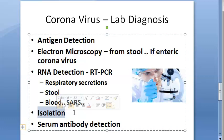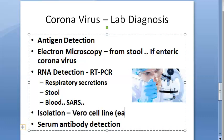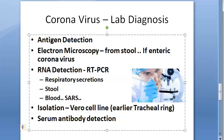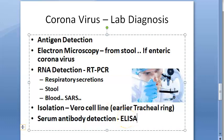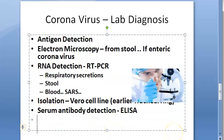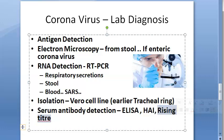SARS was isolated from respiratory specimens using verocelline. Earlier they used tracheal ring culture, now they use verocelline. For serum antibody detection, you try to find the antibody to the virus in the patient's blood using ELISA — enzyme-linked immunosorbent assay. You can also use hemagglutination inhibition test. Rising titer of antibodies between the acute and convalescent sera can be used to establish the diagnosis.